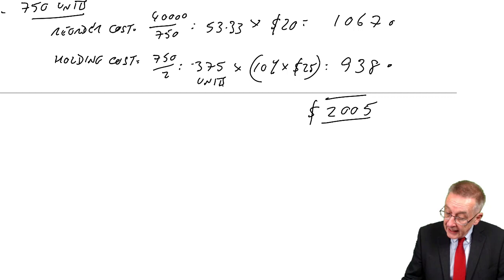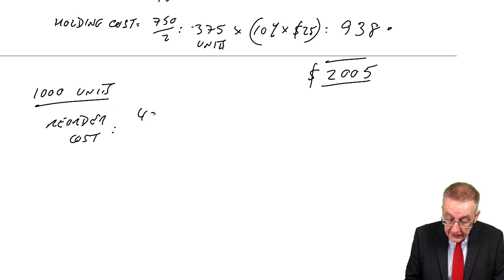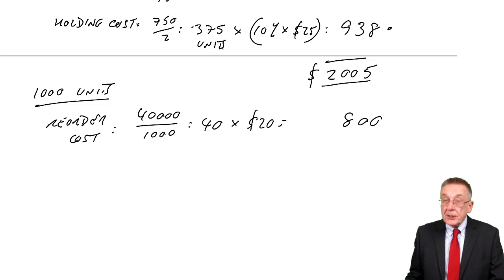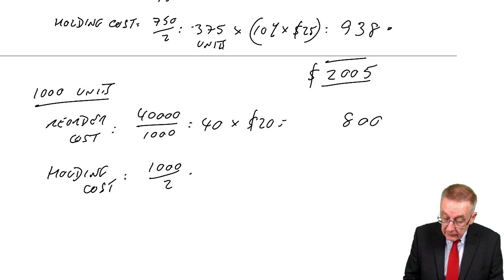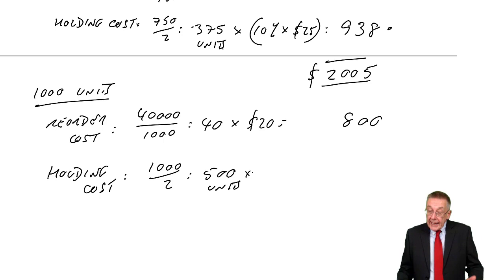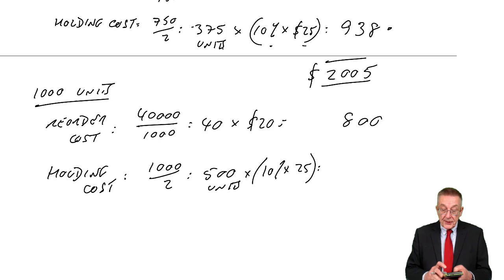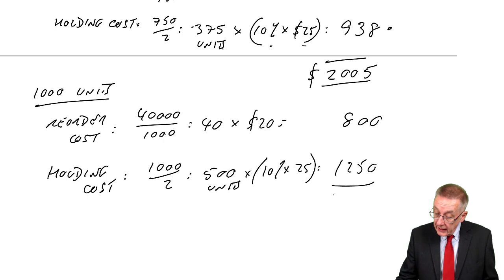Now 1,000 units each time. Reorder cost: 40,000 divided by 1,000 is 40 orders, each costing $20, so $800 a year. Holding cost: average inventory is 1,000 divided by 2, which is 500 units. Holding cost per unit is 10% of $25, which is $2.50. Total holding cost: $1,250. Total cost over the year: $800 plus $1,250 equals $2,050.